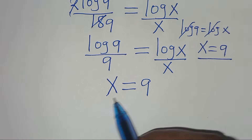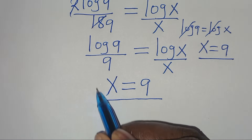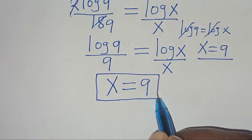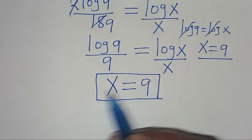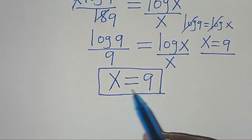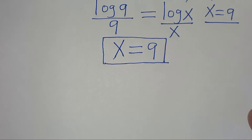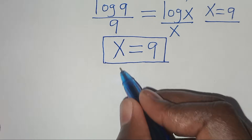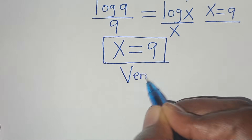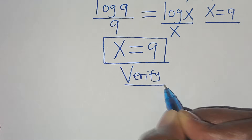So this is the value of x. Applying method 1 and method 2, both give the same value of x, which is equal to 9. The next step is to verify that this value of x satisfies the equation.